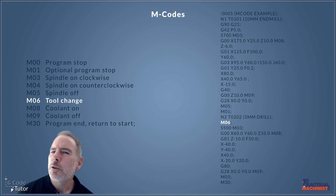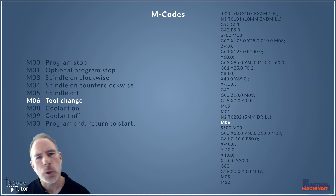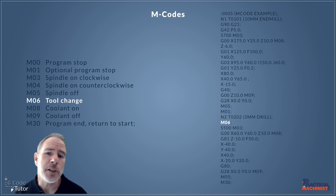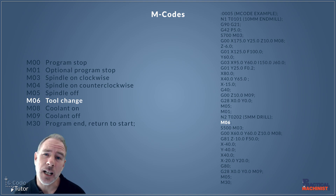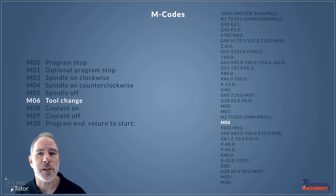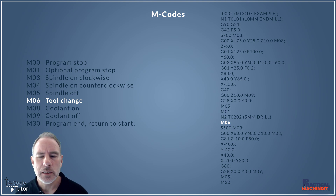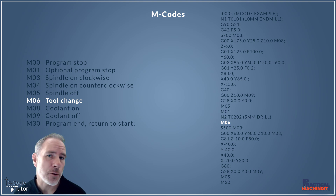The next M-Code I wish to talk about is M06 — this is our tool change M-Code. Once we've told the machine what tool we are using, we use M06 to perform a tool change. On a CNC lathe, this would rotate the turret and bring the tool into position ready to cut. On a CNC mill, it would perform a tool change from the carousel and put a new cutter into our spindle. So once we've declared what the tool is, we then perform the actual tool change by using the M06 M-Code.